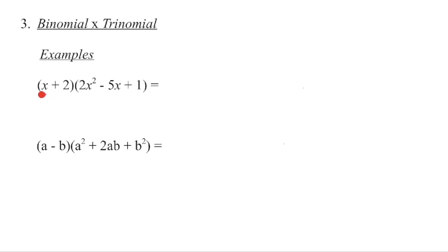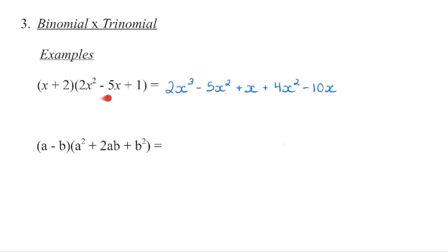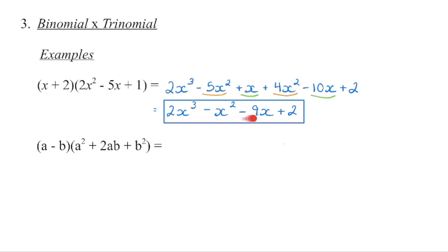Now if we're going to multiply a binomial times a trinomial, the same concept applies — multiply every term by every other term. The easiest way is to take the first term in the binomial and multiply it through the trinomial, then take the second term and multiply it through as well. So x times 2x squared is 2x cubed, x times negative 5x is negative 5x squared, x times 1 is x. Then 2 times 2x squared is 4x squared, 2 times negative 5x is negative 10x, and 2 times 1 is 2. Combine like terms to get the simplified polynomial.